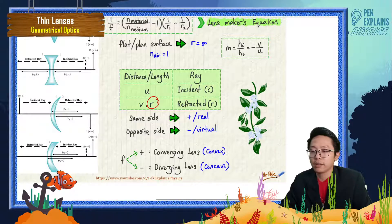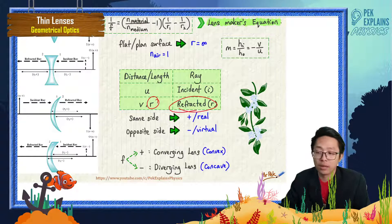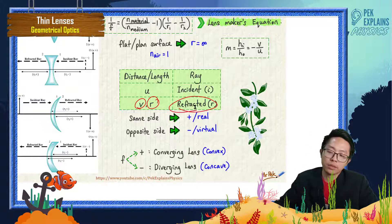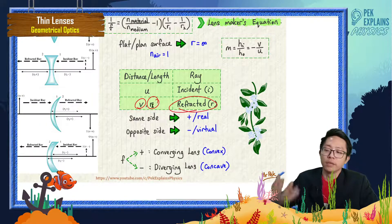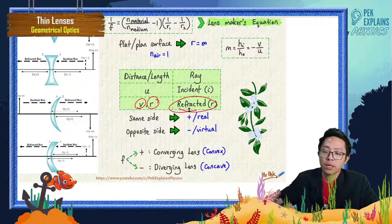Once you draw the incident and refracted rays, you can easily compare the radius direction to the refracted ray. If the radius is on the same side as the refracted ray, it is positive. If the radius is on the opposite side of the refracted ray, it is negative.